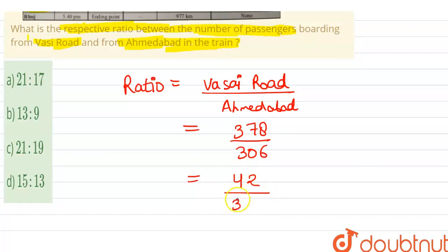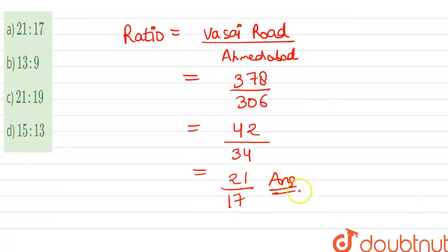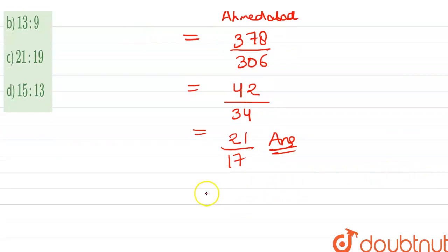Dividing again, we check: 9 goes into 378 giving 42, and 9 goes into 306 giving 34. Then dividing further by 2, we get 21 over 17. So the ratio comes out to 21 is to 17.